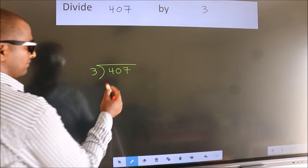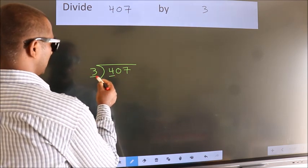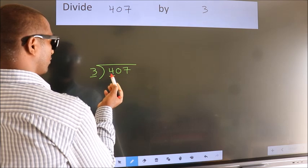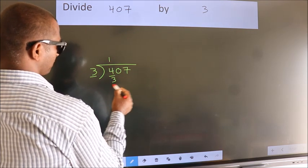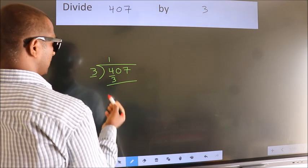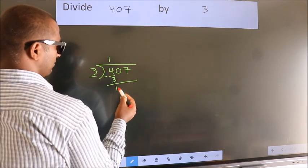Next, here we have 4, here 3. A number close to 4 in 3 table is 3 ones 3. Now, we should subtract. We get 1.